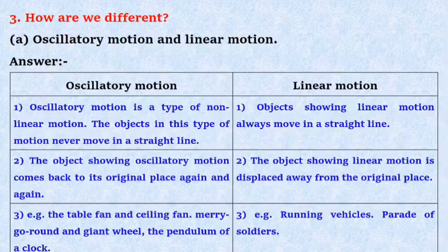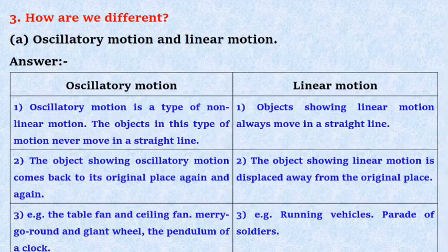Oscillatory motion: The object showing oscillatory motion comes back to its original place again and again. In linear motion, the object showing linear motion is displaced away from the original place.